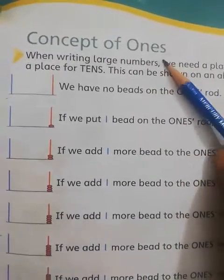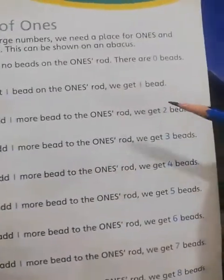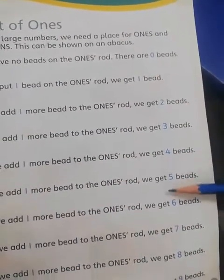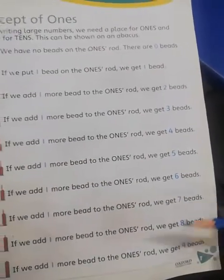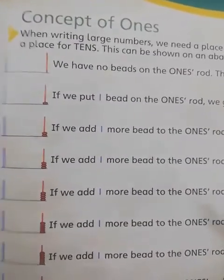Ones means one digit — like one, two, three, four, five, six, seven, eight, nine. You see, up to nine, all are one-digit numbers.